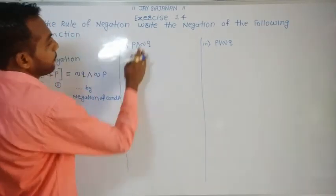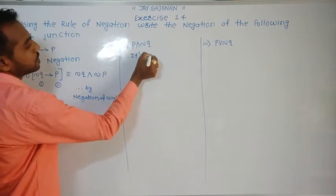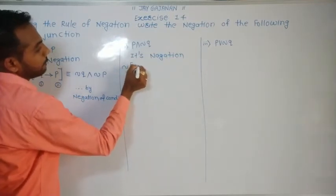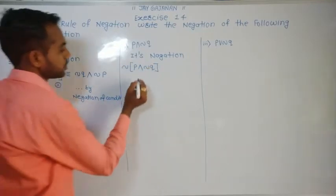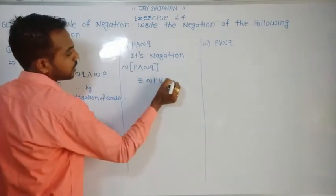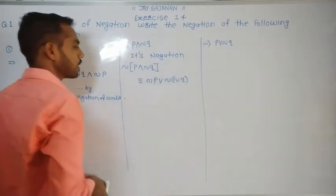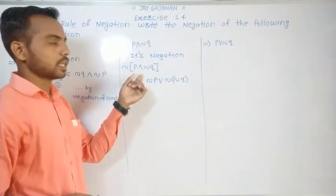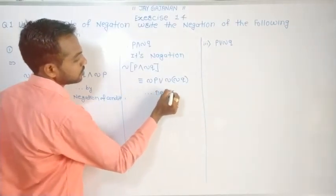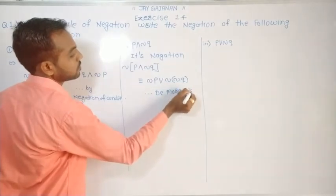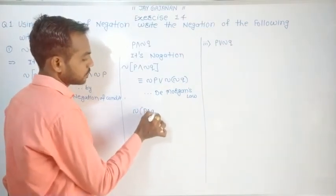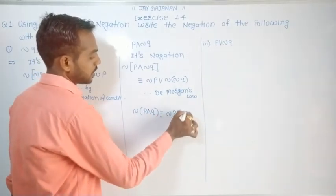The second example is P and negation Q. Its negation is negation of (P and negation Q). By applying De Morgan's law — negation of (P and Q) equals negation P or negation Q — it becomes negation P or negation of negation Q.